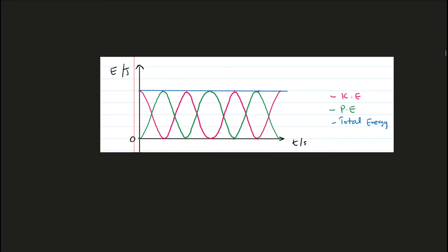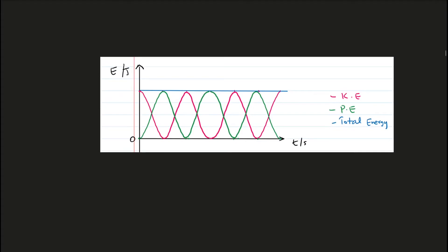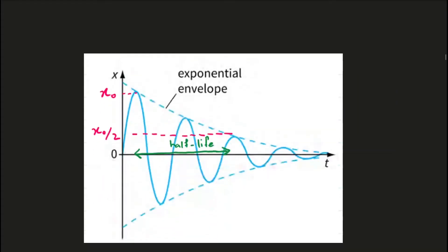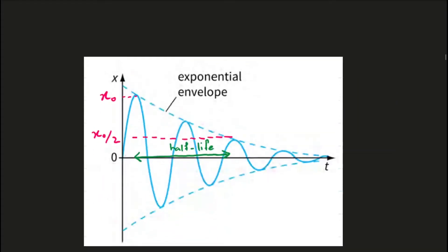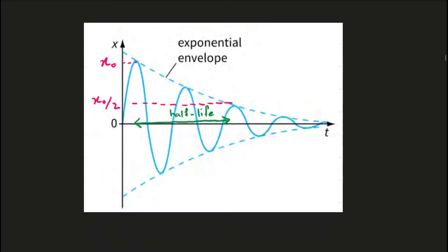This graph from simple harmonic motion shows the kinetic energy, potential energy, and total energy, and how each of these types of energy varies with displacement during simple harmonic motion. The next graph again shows kinetic energy, potential energy, and total energy, but this time the variation is shown with respect to time.